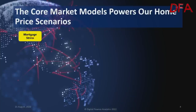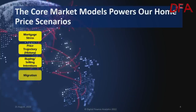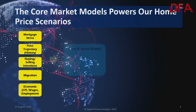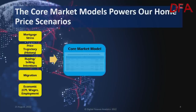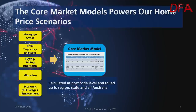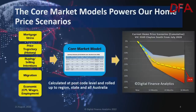Our analysis looks at mortgage stress, the price trajectory, buying and selling intentions, migration statistics, and economic data through the core market model and our scenarios. That allows us to form a view down at a postcode level. It's not predictive — it's just indicative.